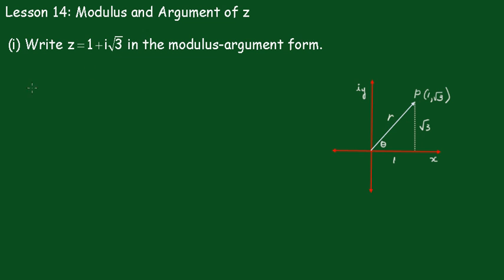So, we can see that r is equal to the square root of 1 squared, which is 1, plus root 3 squared is 3, so r is equal to 2.